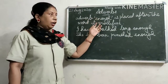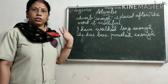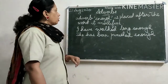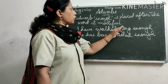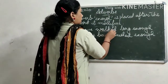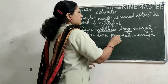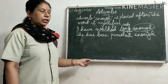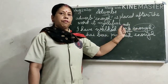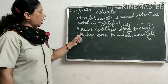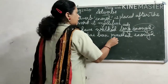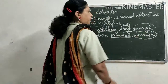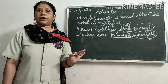The word 'enough' is a special case — it is always placed after the word it modifies. For example: 'I have walked long enough' — 'enough' comes after the adjective 'long.' And 'She has been punished enough' — 'enough' follows the verb 'punished.' This rule applies specifically to the word 'enough.'